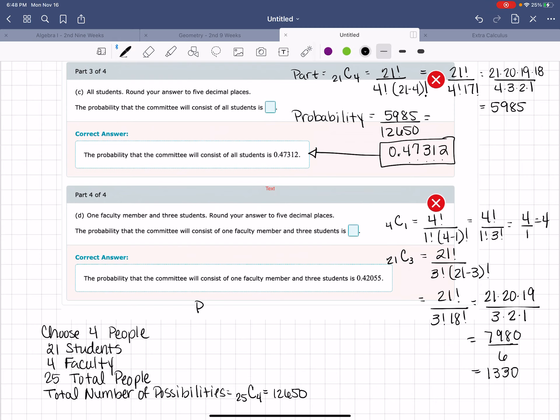That's going to give me the probability of 1 faculty and 3 students. So that gives me 4 choose 1 times 21 choose 3, all over 25 choose 4.